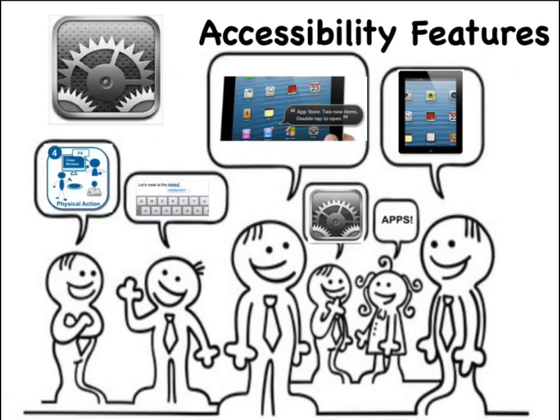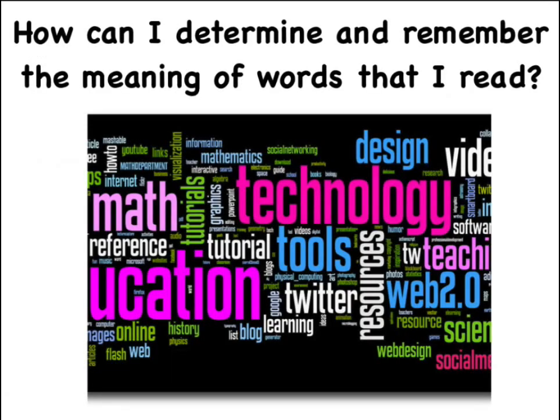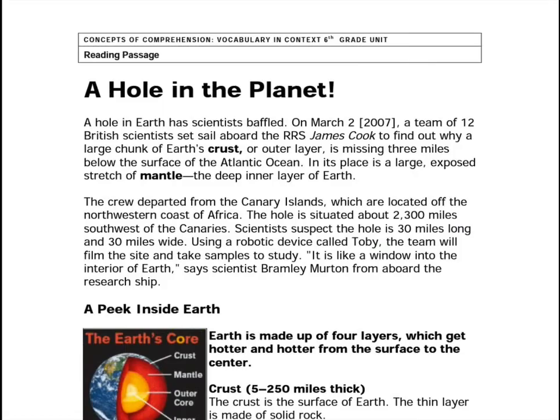The accessibility features of the iPad allow the user to vary the methods for response and navigation as students determine the meaning of words within non-fiction text. In this activity, students explore the question: how can I determine and remember the meaning of words that I read? To help them answer this question, they will read informational text and create written and/or visual definitions.